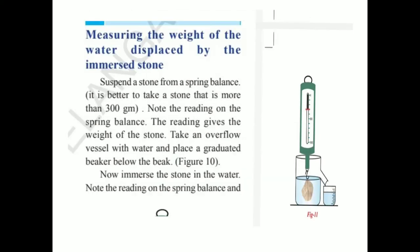Now we are measuring the weight of the water displaced by the immersed stone. Suspend a stone from a spring balance and note the reading — this gives the weight of the stone. Take an overflow vessel filled with water and place a pre-weighed beaker below it. Immerse the stone in the water and note the reading on the spring balance. Here also, we are measuring the weight of the stone in both cases — one in air and one in water — and we are measuring the weight of the water that is equal to the apparent loss of weight of the stone.